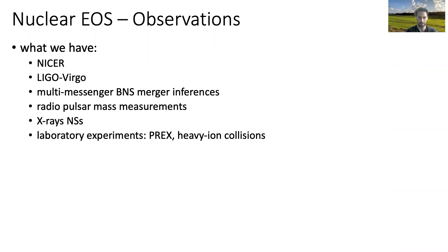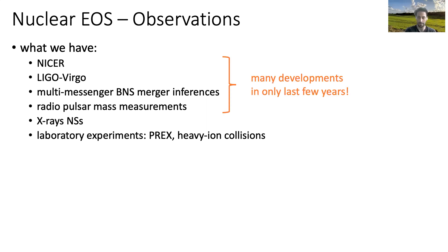This is quite an impressive list of various different kinds of observations that are starting to probe the nuclear EOS. Many of these are giving us new results only in the last few years. NICER has produced incredible results in the past year or so, and LIGO-Virgo with GW170817 and subsequent detections — although those are not actually very constraining for the EOS — certainly GW170817 is.